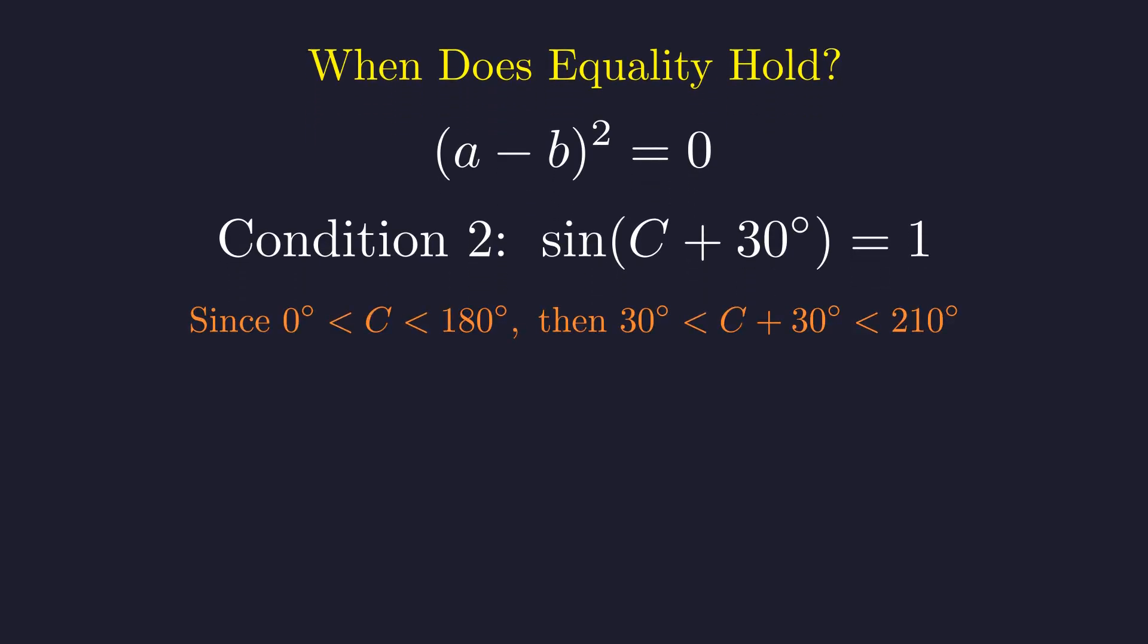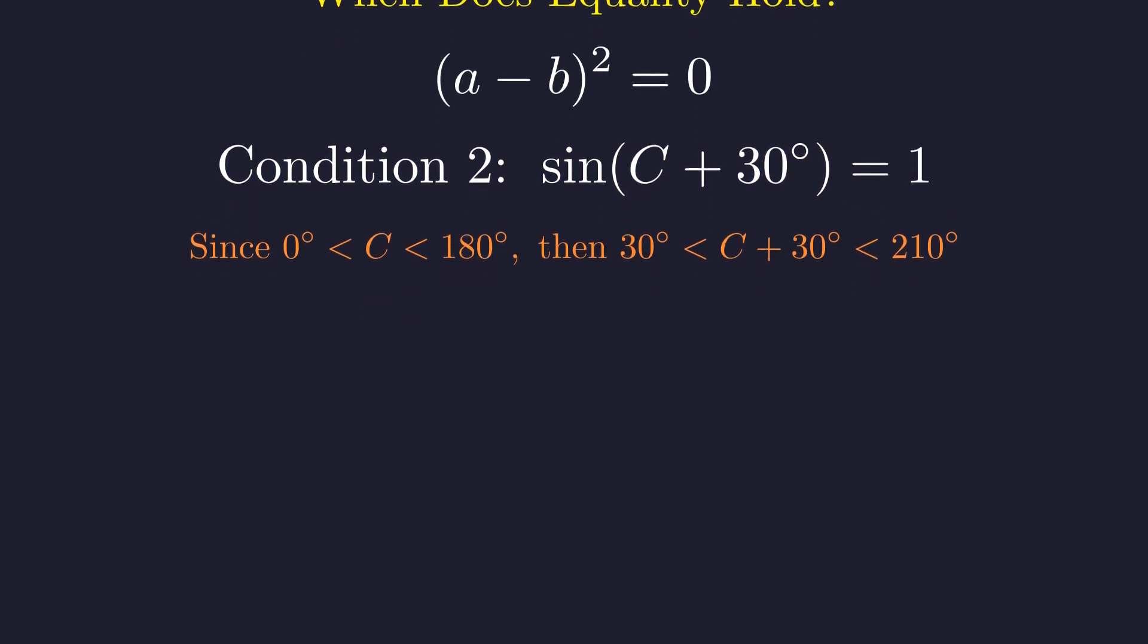Here's the key constraint: C is an angle in a triangle, so it lives between 0 and 180 degrees. This means C plus 30 degrees must be between 30 and 210 degrees. And within this specific range, there's exactly one angle whose sine equals 1. That special angle is 90 degrees, which means C must be 60 degrees. Things are coming together beautifully.